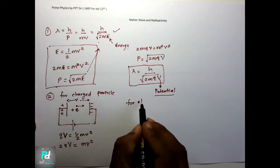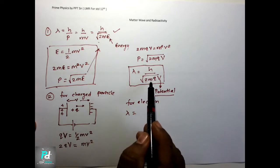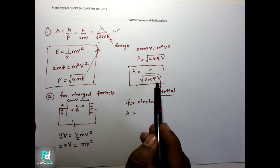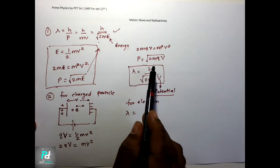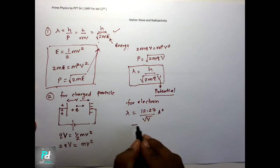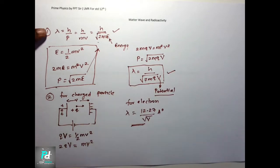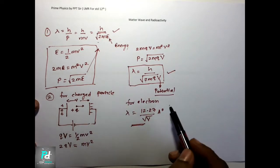So for normal particles, the general formula is lambda equal to h upon p, h upon mv, or in terms of energy: h upon root of 2mE. In terms of potential: lambda equal to h upon root of 2mqV — this is only for charged particles. Now for electron specifically: substituting the values — h is known, mass of electron is 9.1×10⁻³¹, charge of electron is 1.6×10⁻¹⁹ — the answer comes to 12.27 upon root of V Angstrom units. This is a specialized formula for electrons.